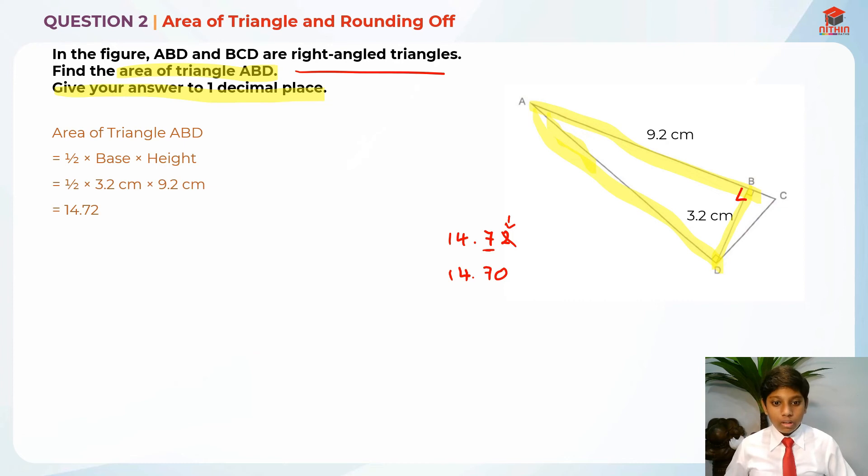And then when you round it down further, it becomes 14.7. Sorry, not round it down. When you take off the 0, it becomes 14.7. So 14.7 is the answer. So in one decimal place, this is basically what you do. So it's rounded off into 14.7.